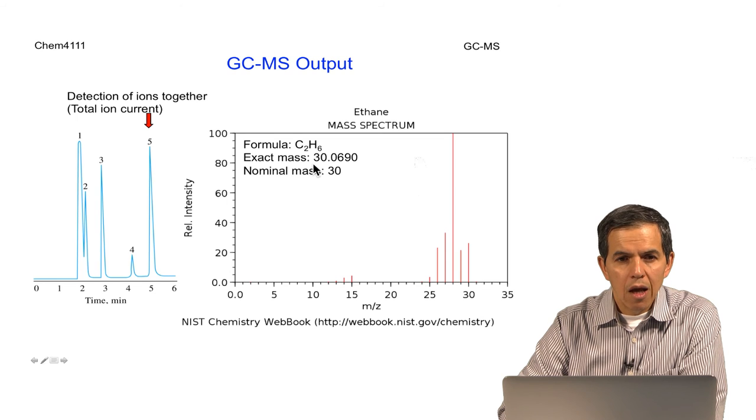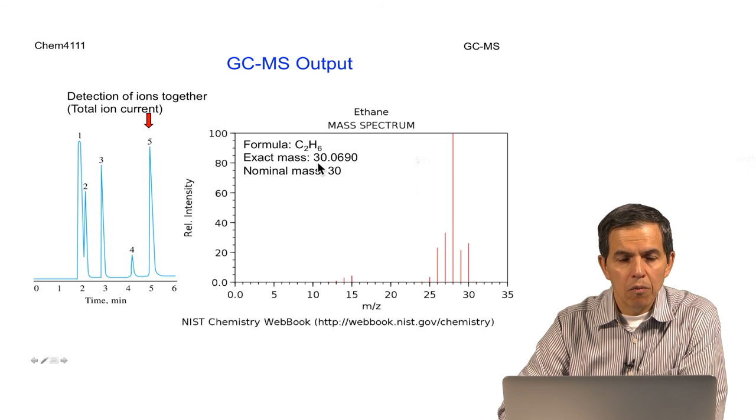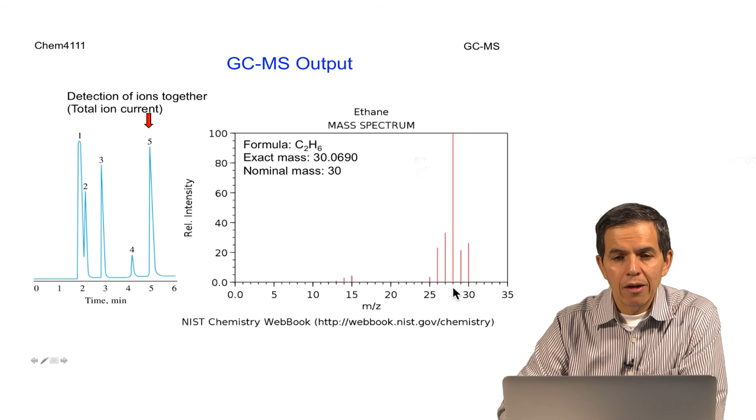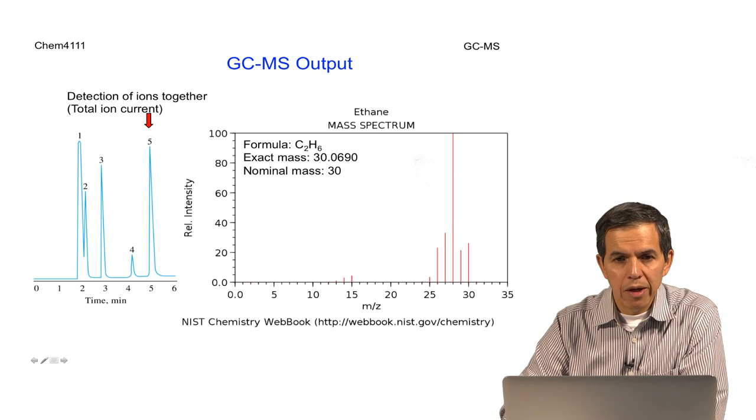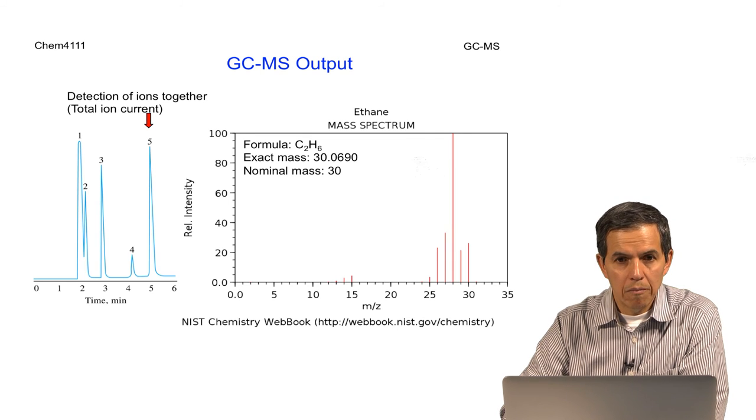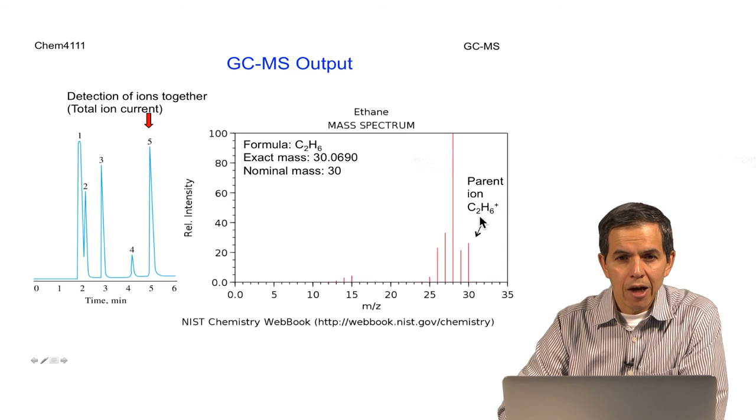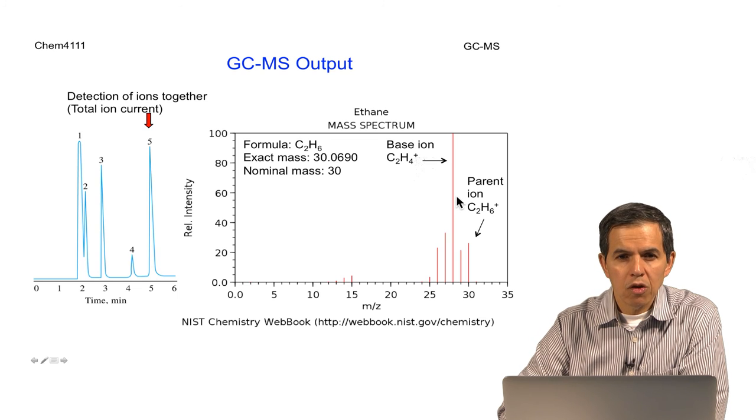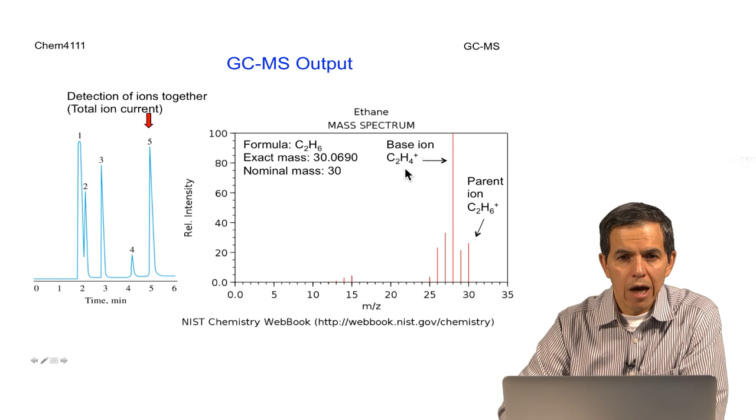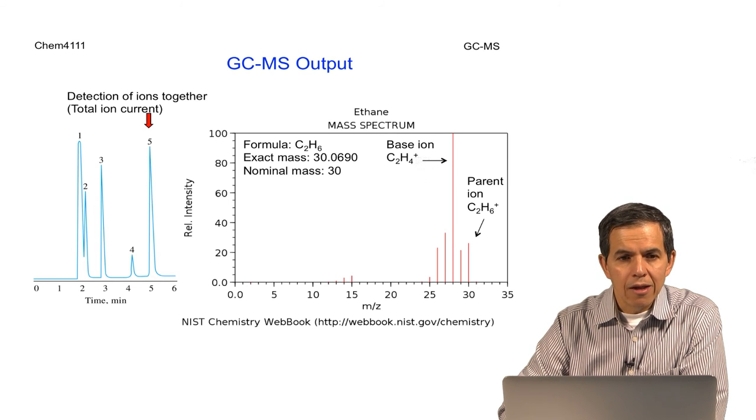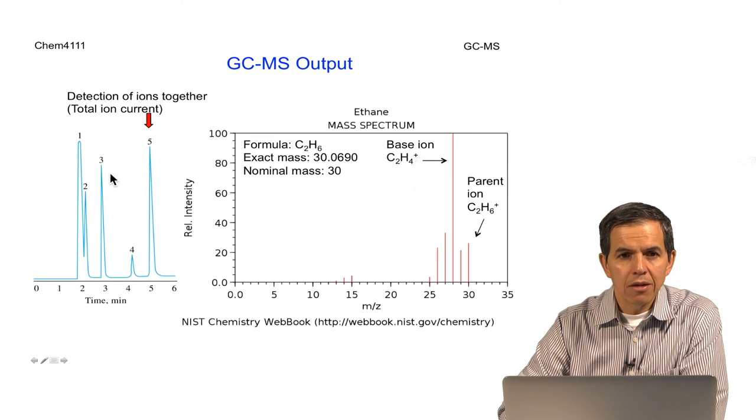The mass spectrum will basically provide unique information about the formula, the exact mass, which represents the mass due to the elemental masses of all components, and the nominal mass that corresponds to the integer part of the exact mass. The mass spectrum will provide unique features that will help compare with a database to identify the compound. Here we have the parent ion of ethane and the base ion, which corresponds to the tallest ion present. It is this combination of mass spectrum and separation that makes GC-MS an excellent technique for analysis of volatile compounds.